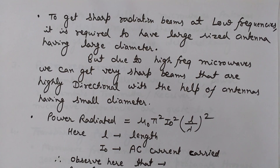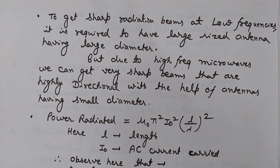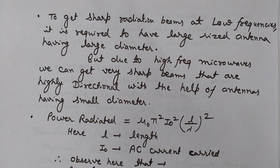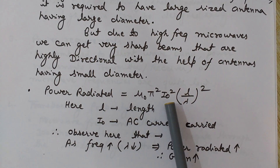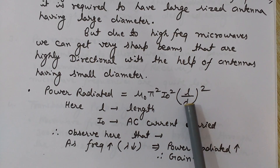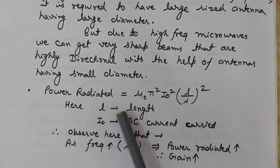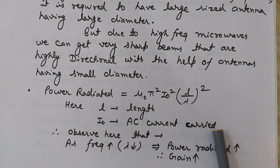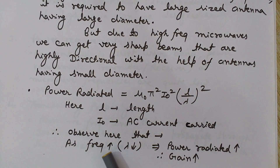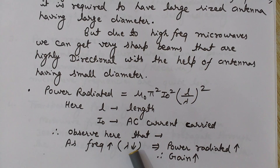Power radiated is given by: mu-naught times pi-squared times i-naught-squared times (l divided by lambda), whole squared — where l is the length and i-naught is the AC current carried. As the frequency increases, wavelength decreases, since they are inverse to each other.